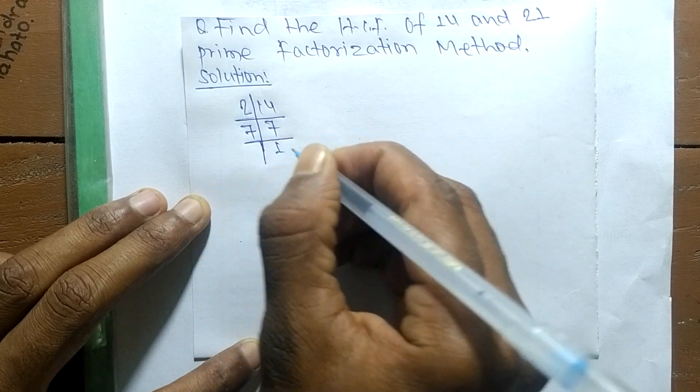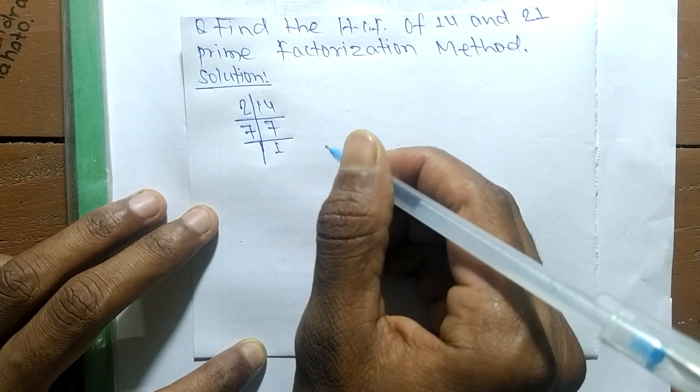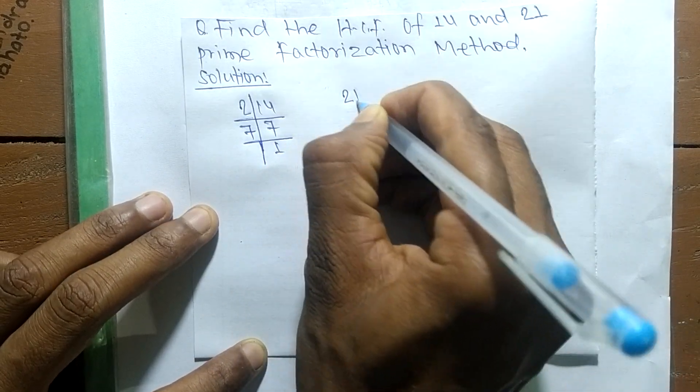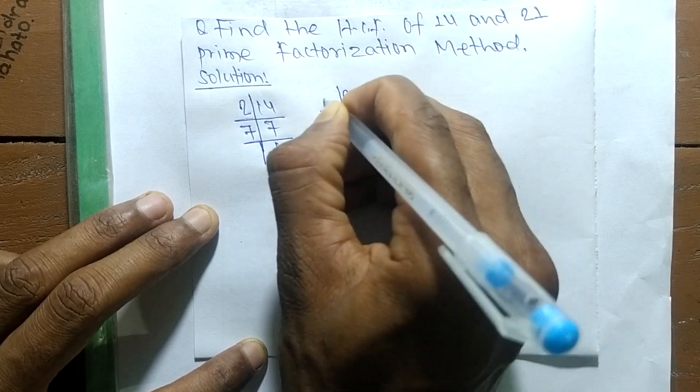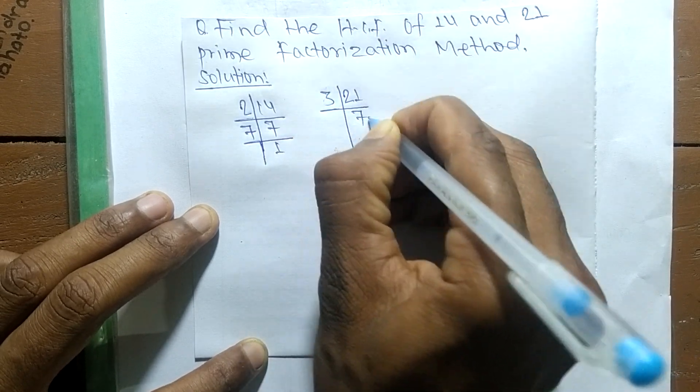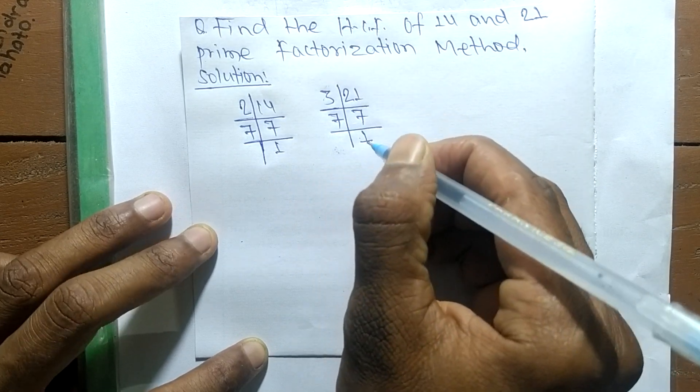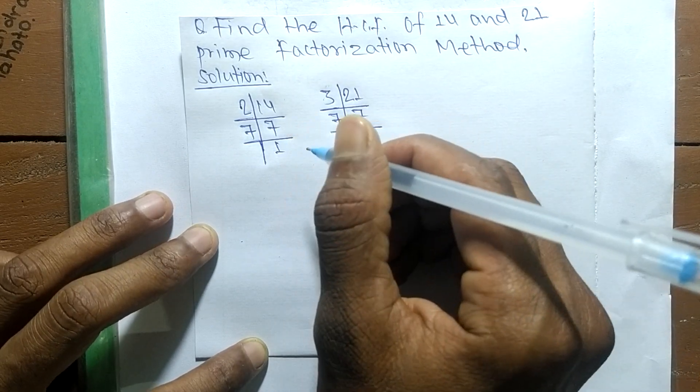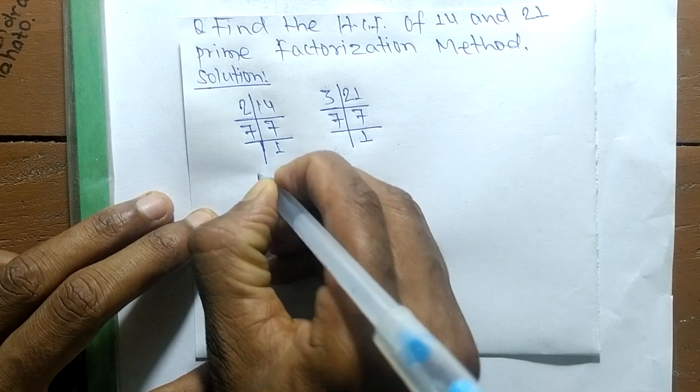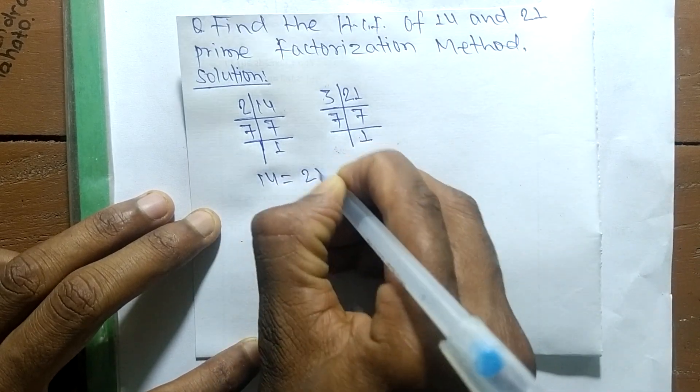In the same way, the prime factors of 21 are 3 times 7 means 21, and 7 times 1 means 7. So from these prime factors we can write 14 is equal to 2 times 7.